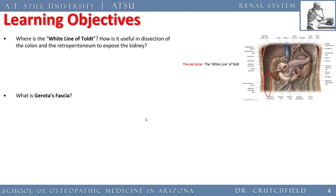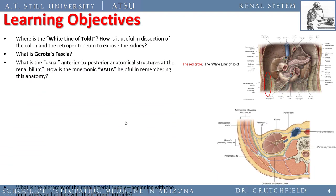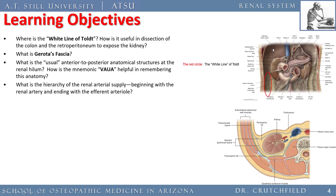What is the white line of Toldt and how is it useful in dissection of the colon and retroperitoneum to expose the kidney? The white line of Toldt is where the peritoneal membrane reflects off the colon onto the sidewall of the peritoneal cavity. The ascending and descending colons are covered anteriorly with peritoneum, but their backsides are just stuck to the sidewall. Where that membrane becomes contiguous with the peritoneum itself is the white line of Toldt. In the OR, we grab the colon, pull it toward us, tent this layer, use cautery to divide right behind it, and it leads us up to the kidney.